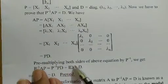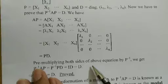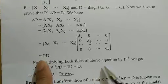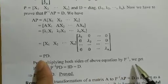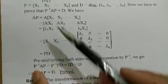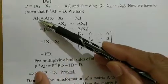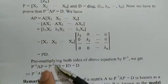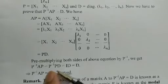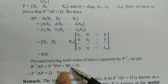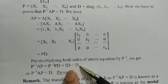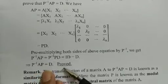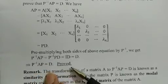Pre-multiplying both sides of the equation AP = PD by P inverse: on the left side we get P inverse·AP, and on the right side P inverse·PD = I·D = D. So P inverse AP equals D — it is proved.